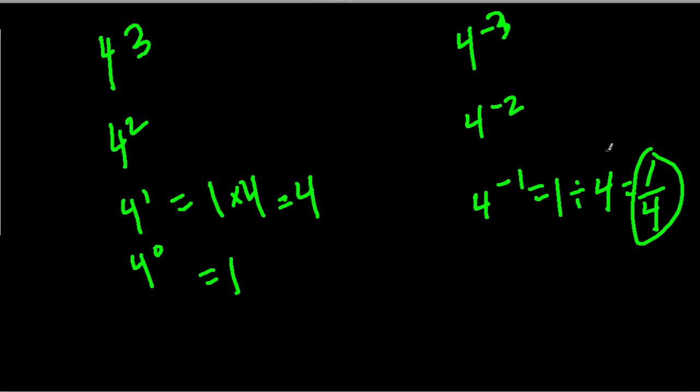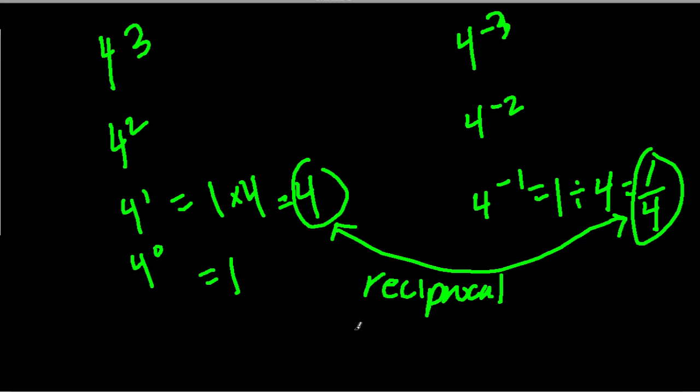So notice, 1 4th and 4, we call these reciprocals. What's the reciprocal? Well, let's say you have A over B. The reciprocal is the flip, B over A. So what's our A over B here? It's 4 over 1. Every number can be written as over 1. And we turn that to 1 over 4. Reciprocal is like flipping the number.